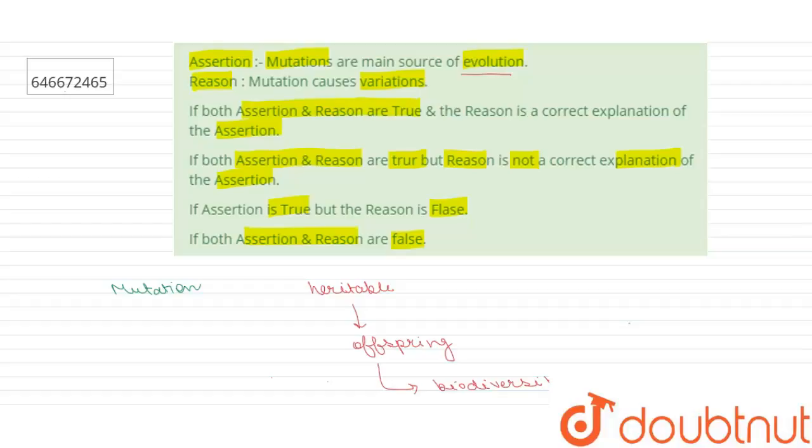When evolutionary mechanisms such as natural selection, including sexual selection, and genetic drift act on this variation, evolution happens, resulting in some features becoming dominant. Natural selection, genetic drift, gene flow, and mutation bias are the processes that contribute to changes in allele frequency.